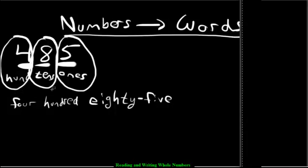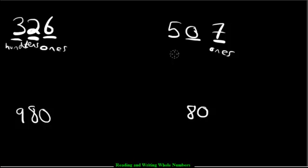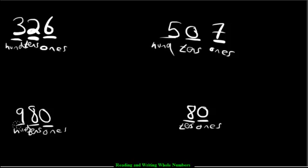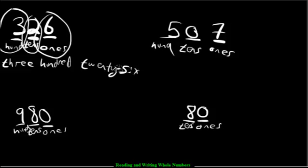Let's do another example. We have four examples and we're going to tackle them the same way — underline each place value, write ones, tens, hundreds on all of them. Going left to right, we write three hundred. Then two tens are worth twenty, so we write twenty. Then six ones are worth six, and then you put the hyphen in between. So 326 is three hundred twenty-six.